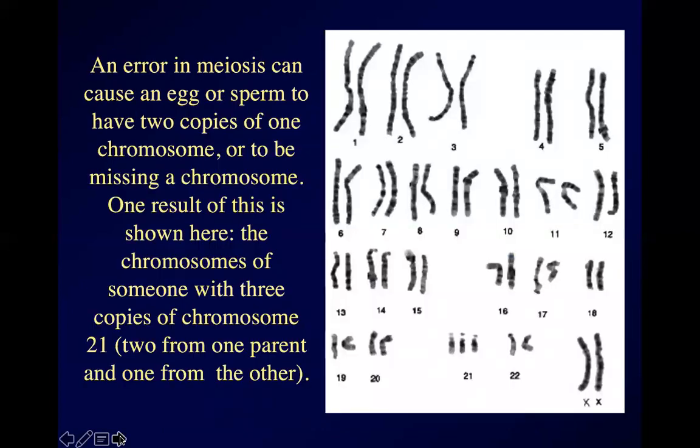When you're making eggs or sperm, you have to divide the chromosomes evenly — one of each pair in each egg or sperm. The whole point of meiosis is to make sure every egg and every sperm has only one of every pair of chromosomes. The problem is that this can sometimes go wrong. Meiosis is very, very good at dividing chromosomes evenly, but it's not perfect. If there's an error, an egg or sperm can end up missing one of the chromosomes or having an extra copy.